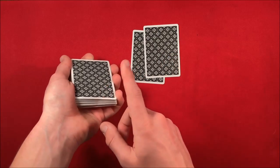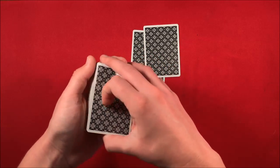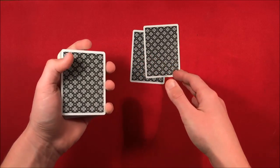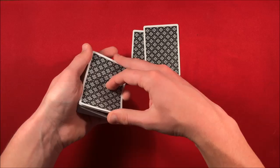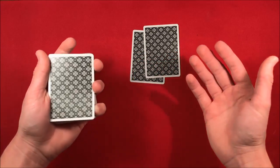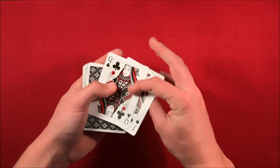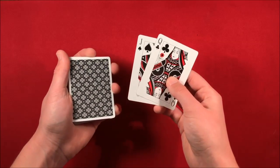As they're looking at them, what you need to do is get a pinky break underneath the top two cards. It was kind of difficult in the performance without a spectator to misdirect, but basically all I did was I riffled down the bottom here and caught a two-card break. It's very simple and the spectators aren't going to really notice if they have these two cards in their hands.